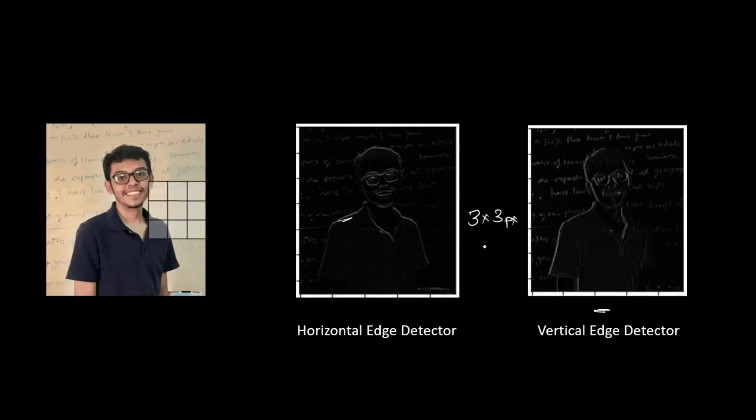So, the total number of parameters in this are only 9. Thus, we are greatly reducing the number of parameters to train. Now, in a single layer of our convolutional neural network, we will be using a lot of such filters. And these filters might detect the edges all around our images.